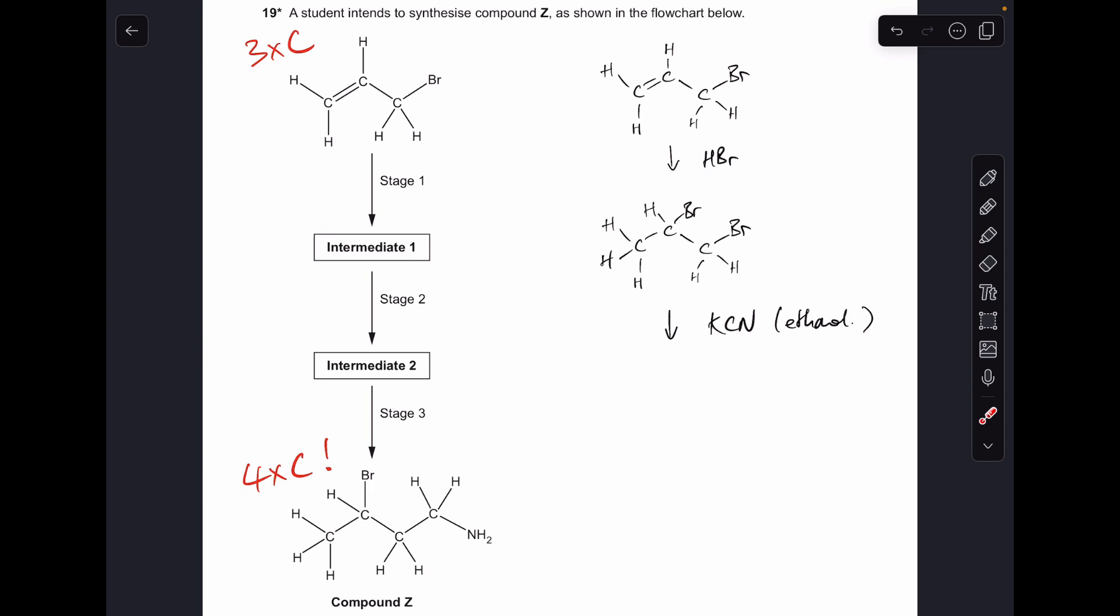Then the next thing I'm going to do is grow that carbon chain by reacting with the KCN in ethanol. But the problem with doing it this way is you're going to get two nitrile groups here. We want that one there, we do not want that one there. So this is the wrong way to do it.